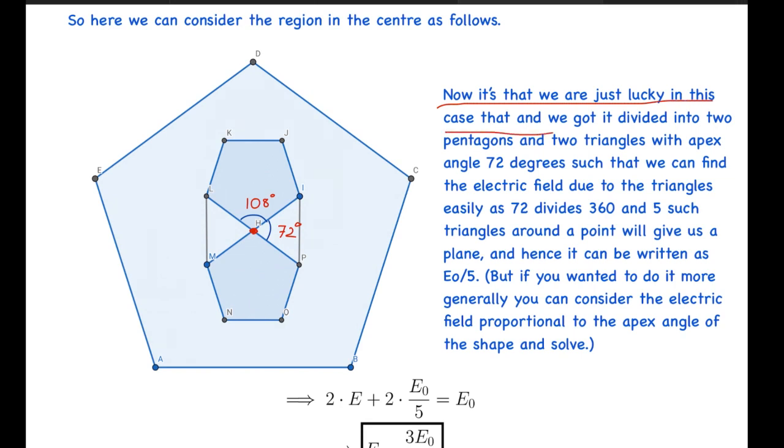Now it's that we are just lucky in this case that we got it divided into two pentagons and two triangles with apex angle 72 degrees, such that we can find the electric field due to the triangles easily, as 72 divides 360. Five such triangles around the point will give us a plane. Basically, we have used the same idea as in the first problem, only that in the first problem the apex angle of the equilateral triangle is 60 degrees, so we needed six such triangles. Here it's 72 degrees, so we need five, and hence